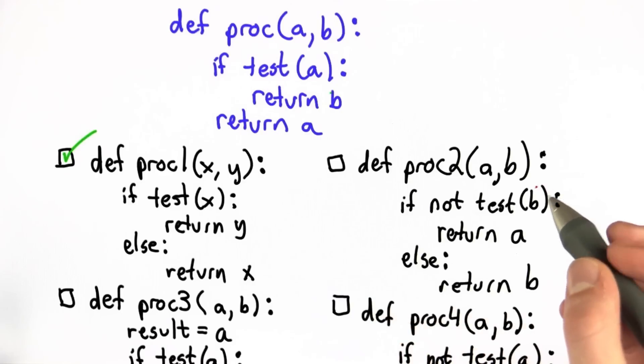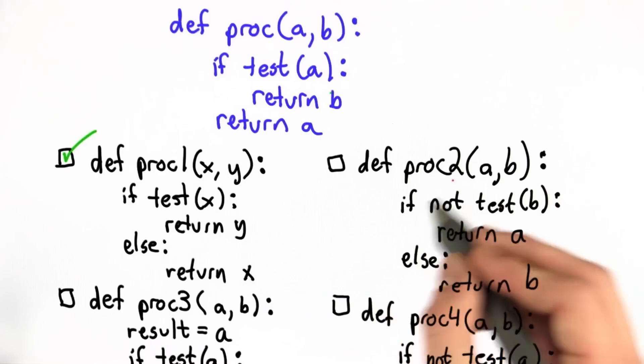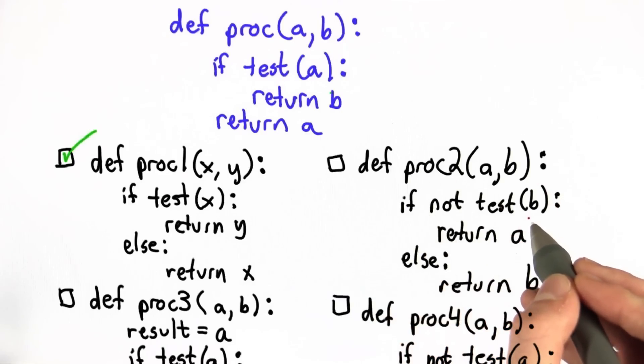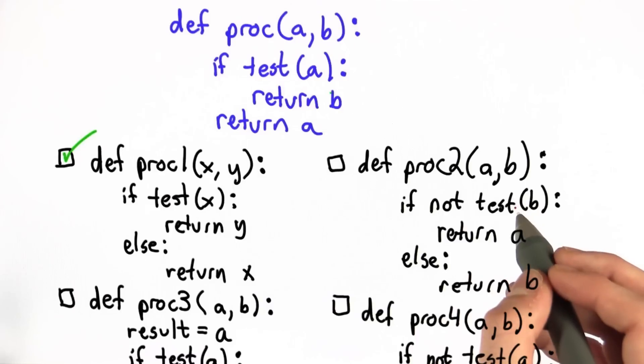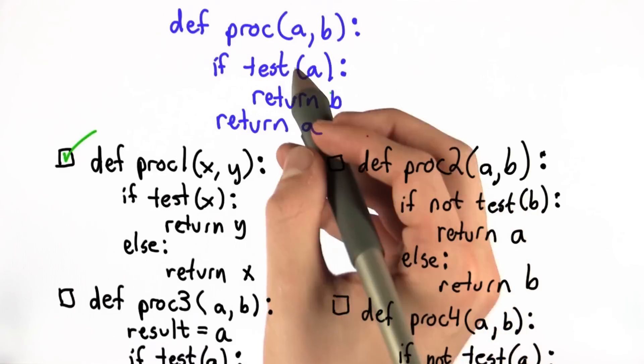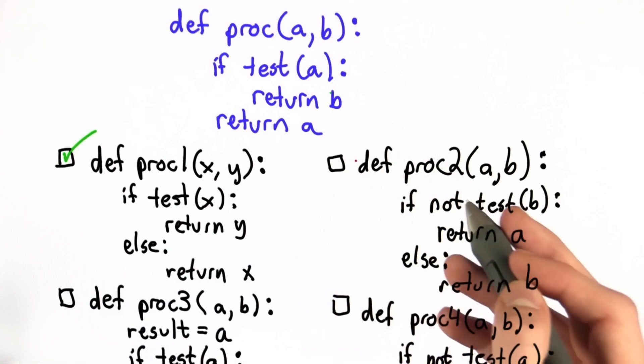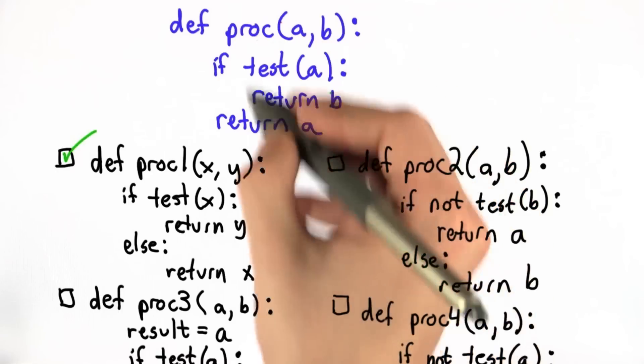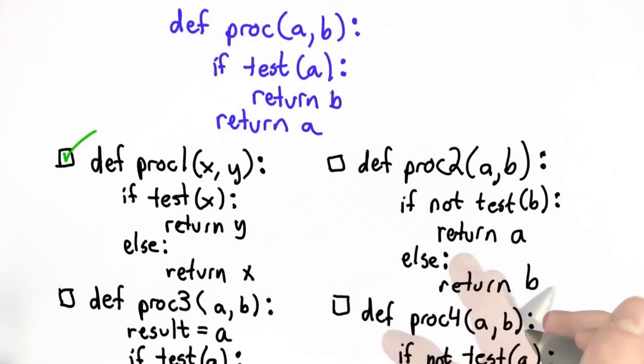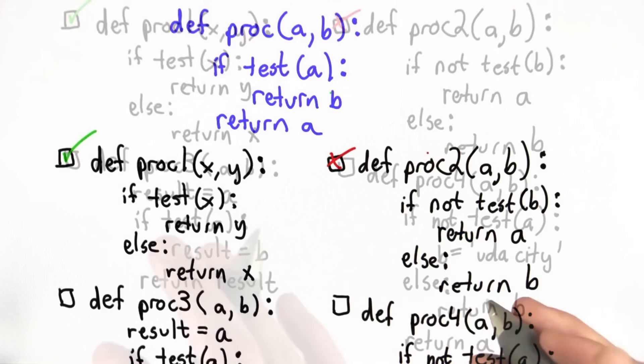Let's look at the second function, proc 2. Notice here that this condition is based on the value of b. We know this can't possibly be equivalent to proc, our original function, because the output here is not dependent on the value of b. So we can tell right away that this is false. This is not equivalent to our original function.